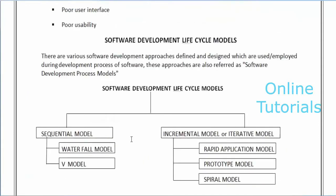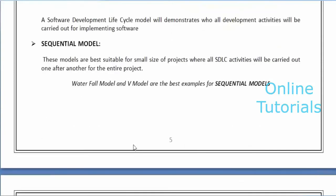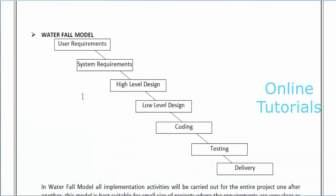In a sequential model, the name itself tells you - sequential means one by one, step by step. In the waterfall model, the phases go in a step-by-step manner one after another. The diagram looks like a waterfall, and just as water flows from top to bottom, the process flows in that same direction - that's why it's called the waterfall model.